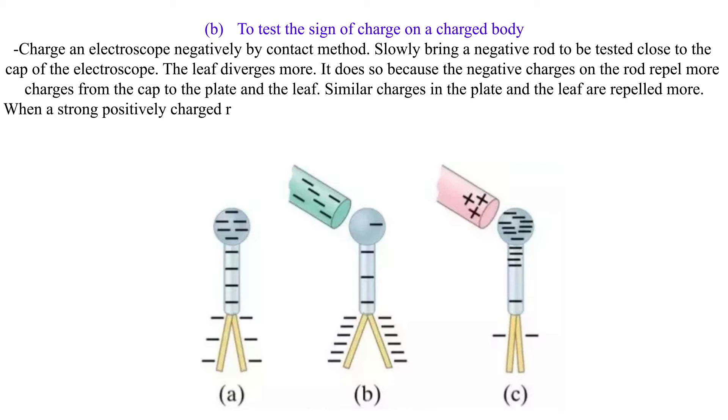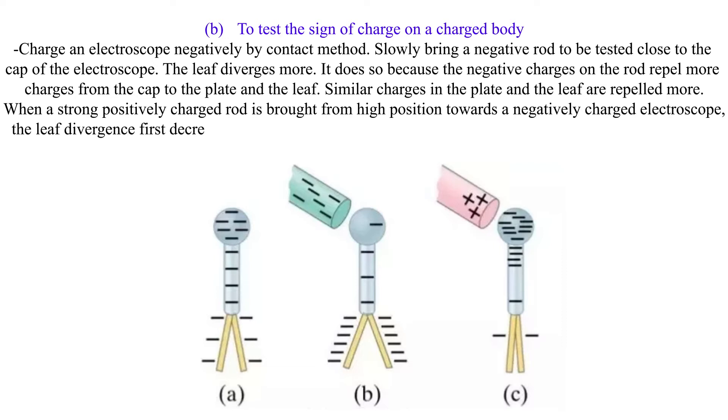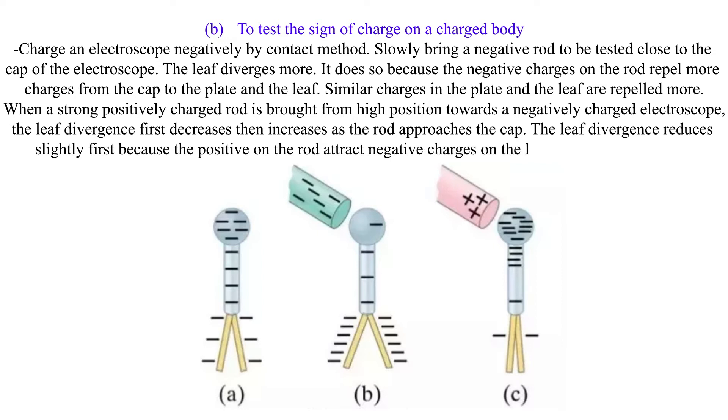When a strong positively charged rod is brought from high position towards a negatively charged electroscope, the leaf divergence first decreases then increases as the rod approaches the cap. The leaf divergence reduces slightly first because the positive on the rod attract negative charges on the leaf and plate, making the electroscope neutral.